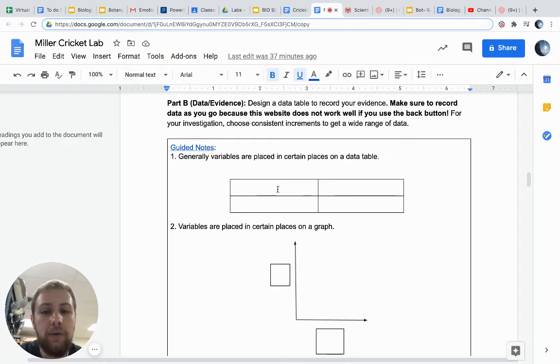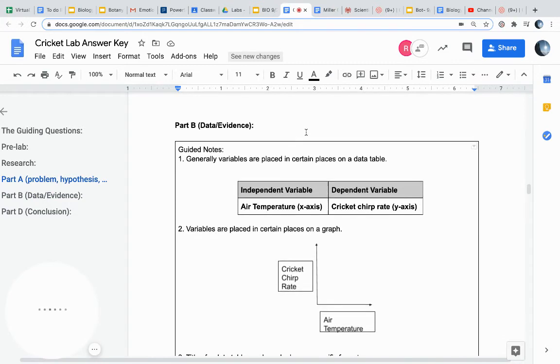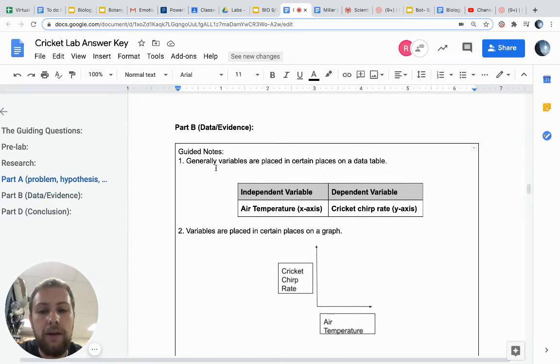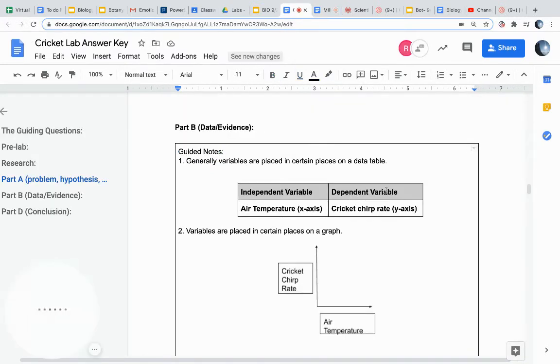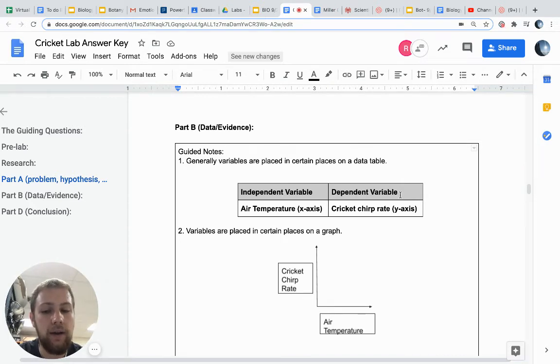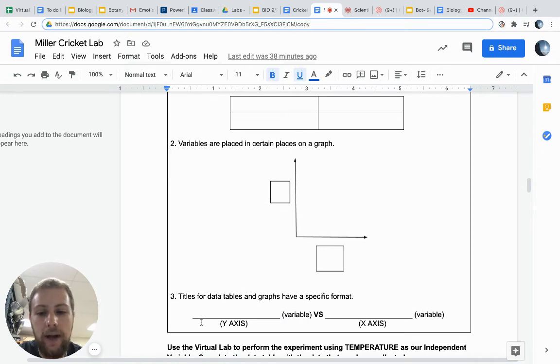Generally we are going to place certain variables in certain places on our data table. We like to have our independent variable on the x-axis, what we are actively changing, which is going to be air temperature. So go ahead and fill in air temperature on your sheet. And then for our dependent, that is going to be what we're measuring that responds to our change. So that's cricket chirp rate. That will go on the y-axis.